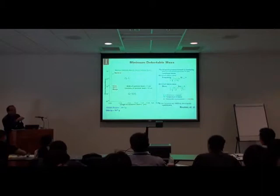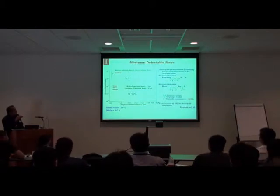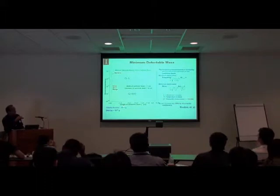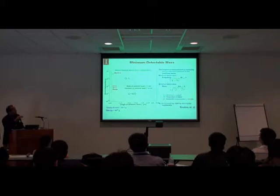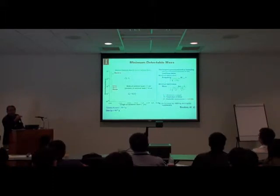Using some noise arguments, you can calculate the minimum detectable mass as a function of cantilever dimension — let's say length — for a width of one micron and thickness of 10 nanometers in silicon. If you have a Q of five, you can detect mass in the range of femtograms.